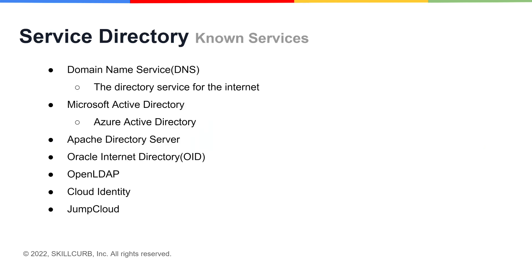Here are some of the most well-known services. Domain Name Service is the directory service for the internet. Others include Microsoft Active Directory or Azure Active Directory, Apache Directory Server, Oracle Internet Directory, Open LDAP, and Cloud Identity.